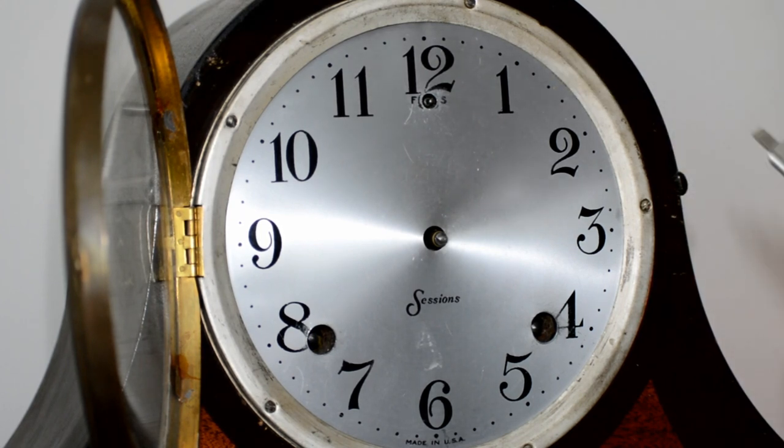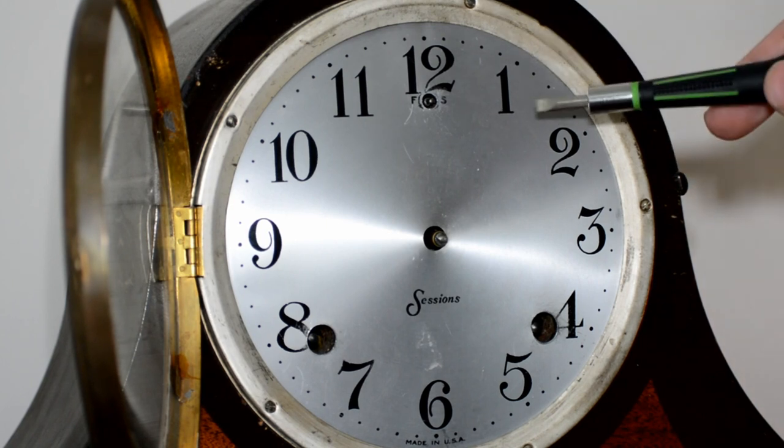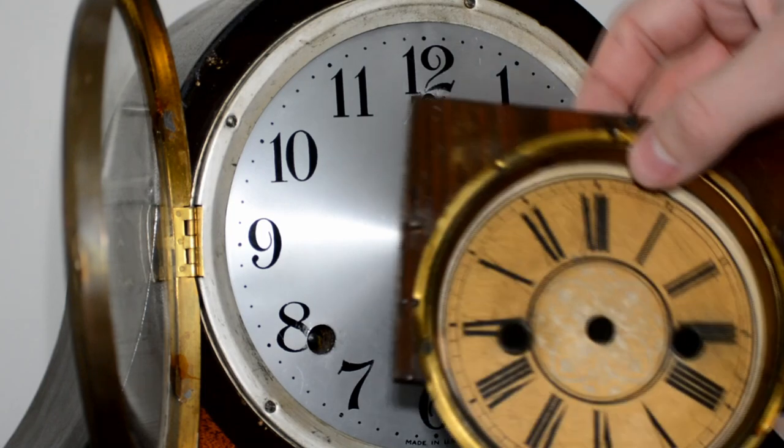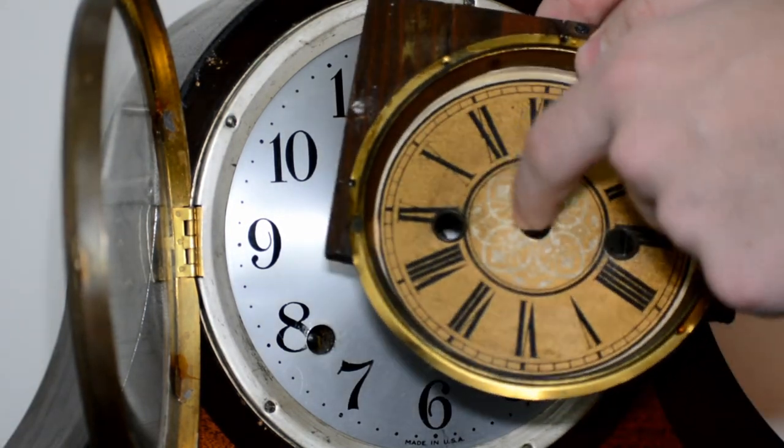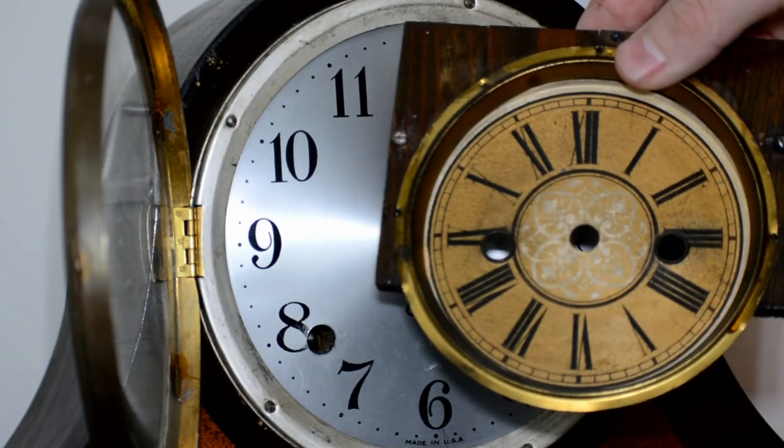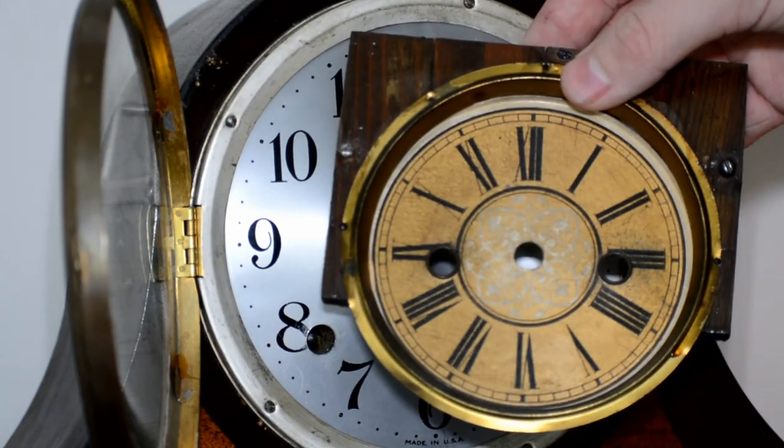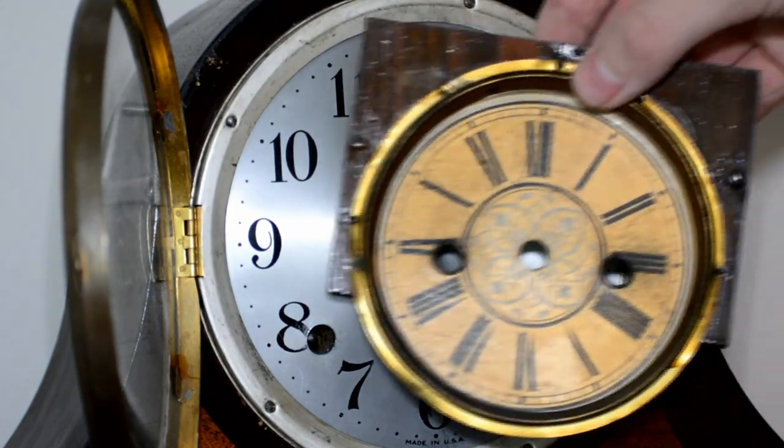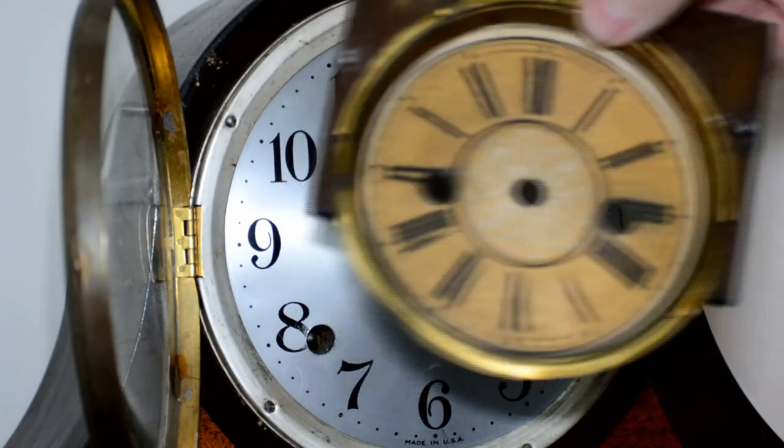Sometimes you'll have screws, sometimes you'll have pins. On this right here, the actual metal dial itself is held on by pins—there's one here, one right there. But if you actually want to remove it from the actual mechanism, there's a screw here and right there, and that will disconnect it from the rest of the clock and take the face off.